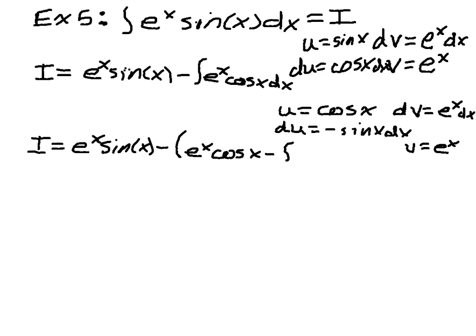Minus the integral of vdu, which, since du is negative sine of x, this becomes plus e to the x, sine of x, dx. Okay, so what's going on here?